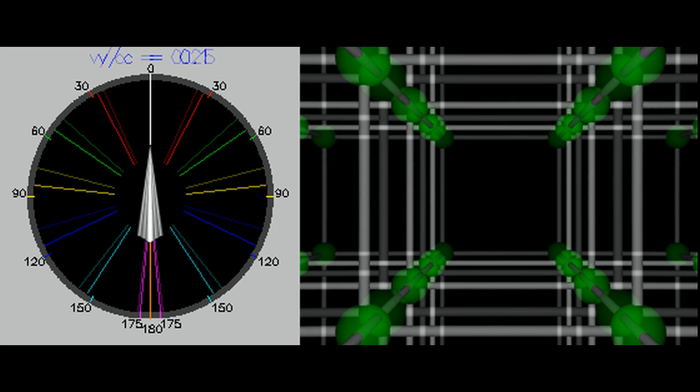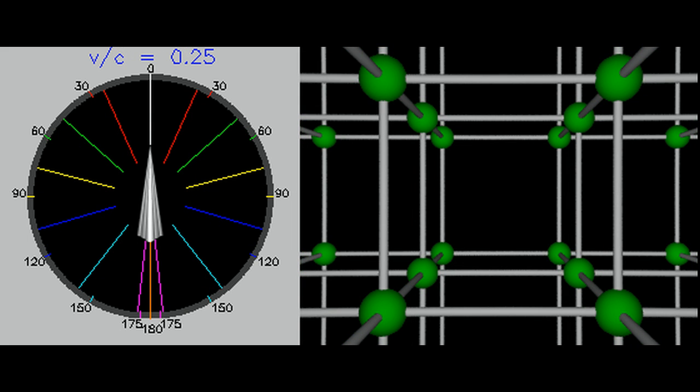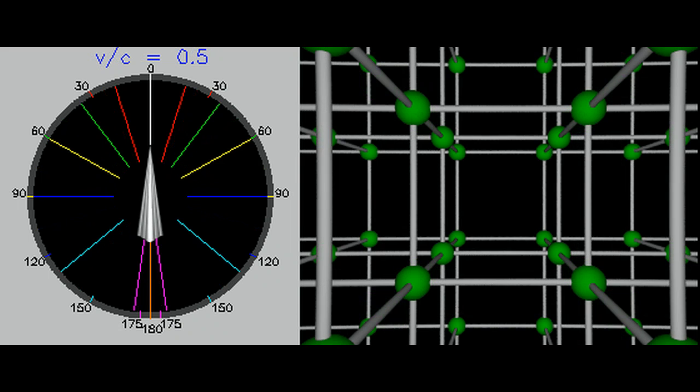At a quarter of the speed of light, Newton is still firmly in charge. Aberration is still behaving linearly, and the contribution of special relativity is less than a quarter of a degree of the total aberration of more than 11 degrees.